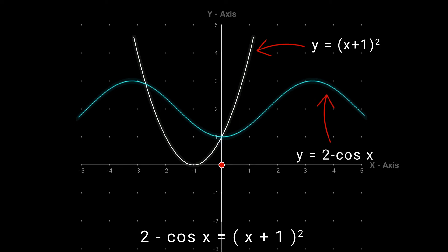So this is the graph of y equal to 2 minus cos x. The graph of 2 minus cos x and x plus 1 whole square intersect with each other at 2 points. So this equation has two solutions.